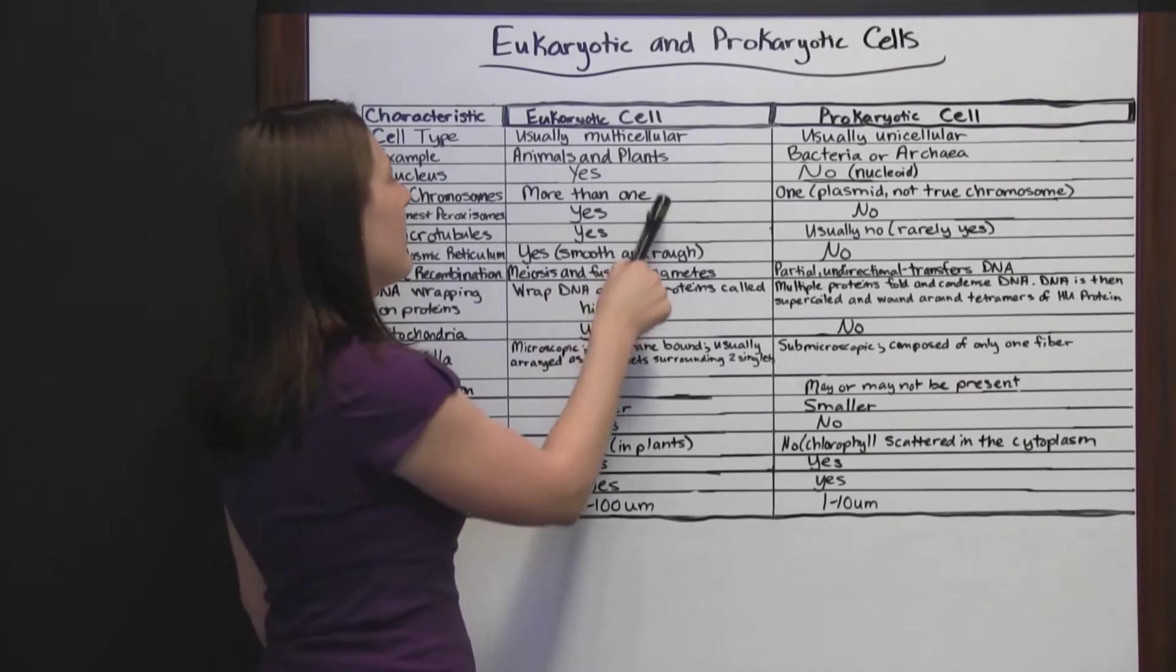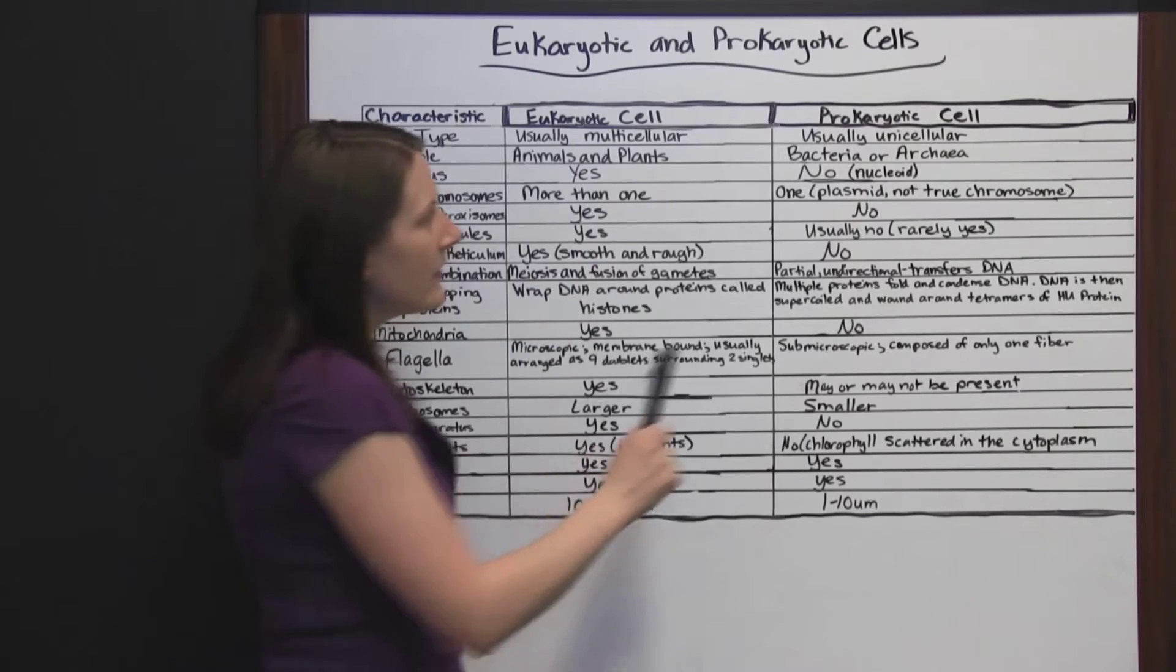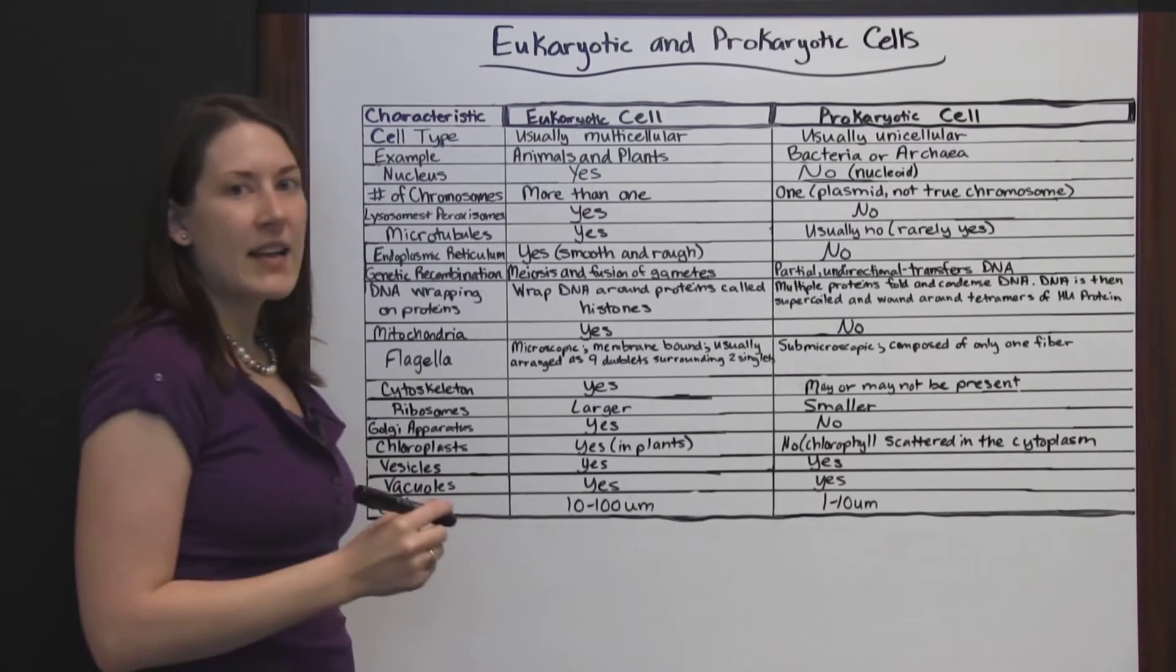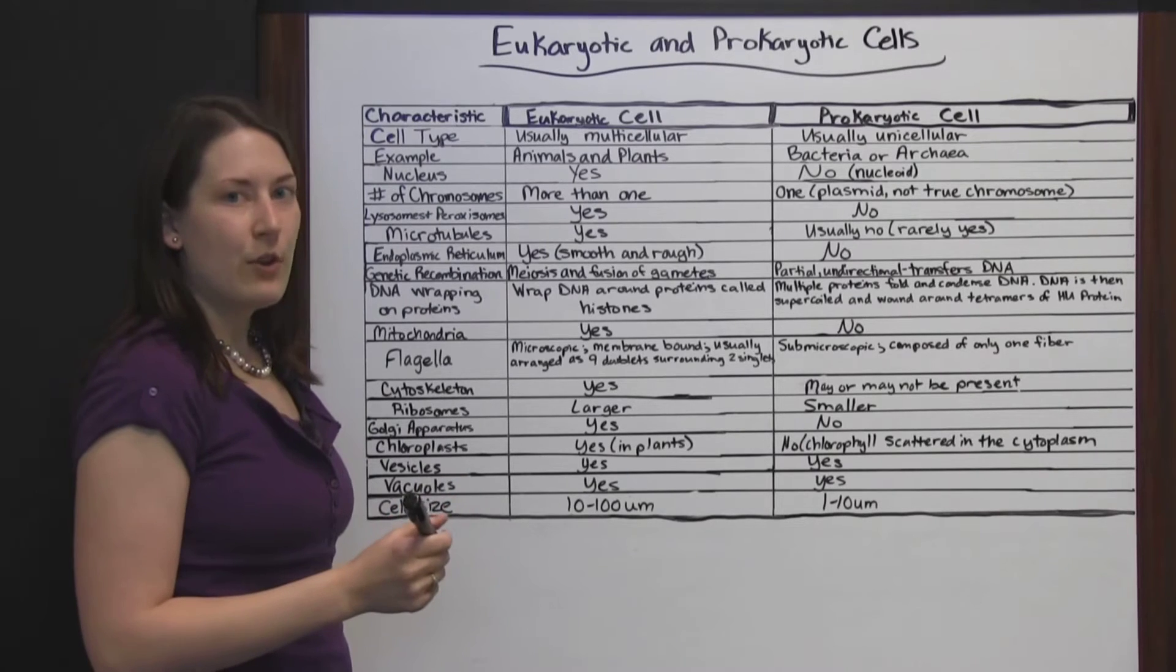Number of chromosomes. Eukaryotic cells are going to have more than one. The prokaryotic cells are just going to have one. It's going to be a plasmid and not a true chromosome.